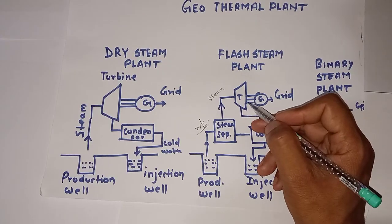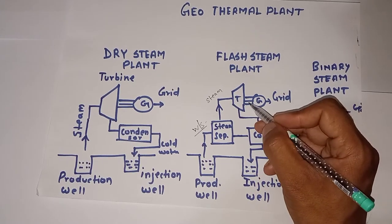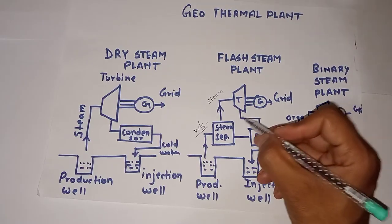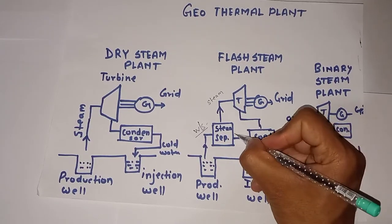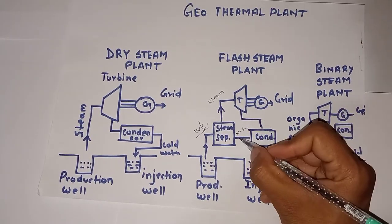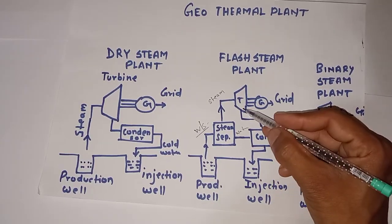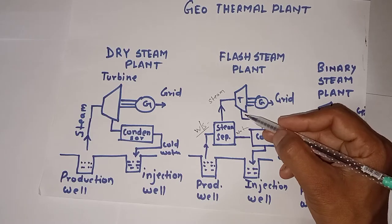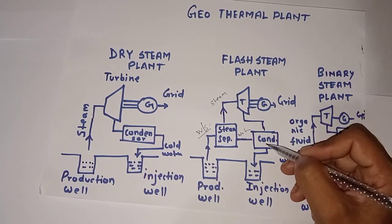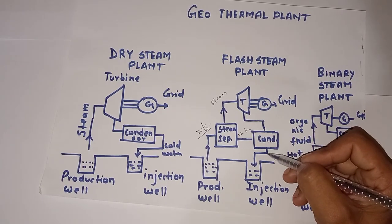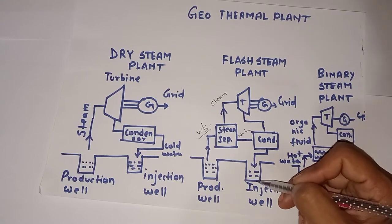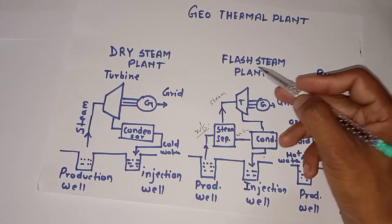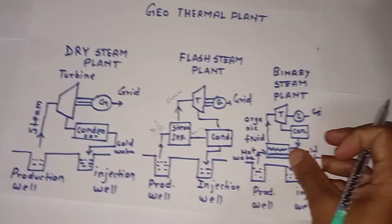The rotating turbine produces mechanical energy, which is converted to electrical energy and used for grid purposes. The remaining water liquid goes to the condenser, and the remaining vapor from water droplets also goes to the condenser, where it is converted back to water and sent to the injection well. This is how the flash steam plant works.